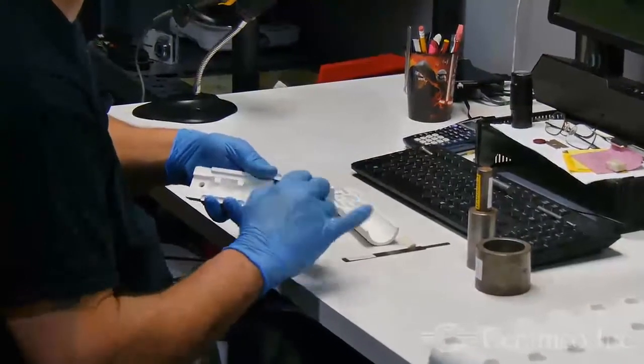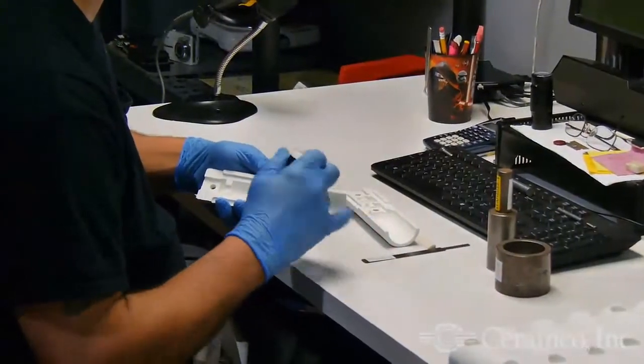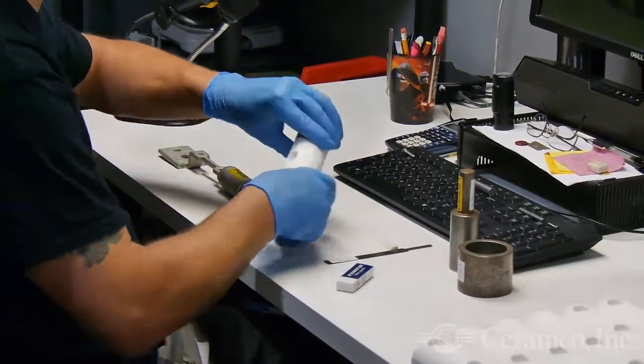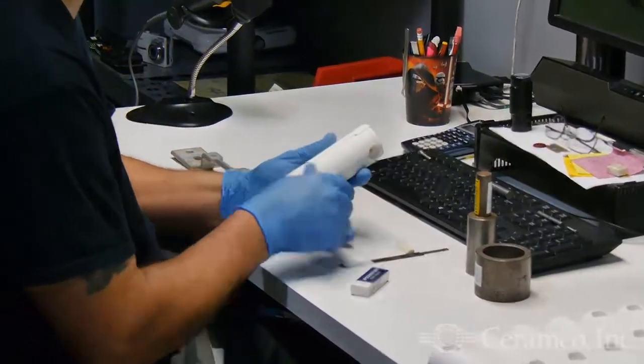It is not uncommon for Ceramco to manufacture a custom ceramic assembly consisting of two or more parts. Mated halves are common as shown here.